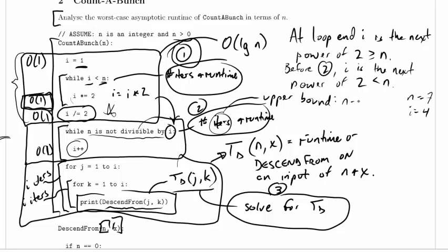So an upper bound is that we do n minus i iterations. Notice, by the way, that i starts out being less than n, which is important because otherwise we could just go forever, right?